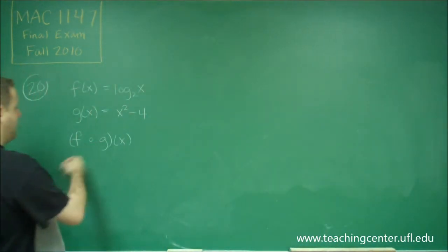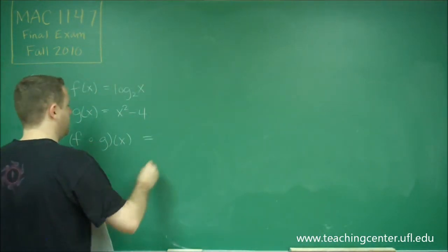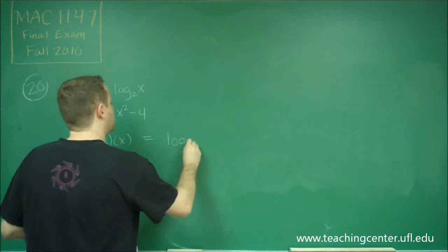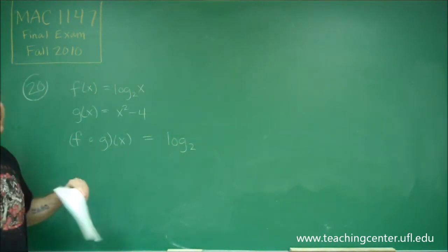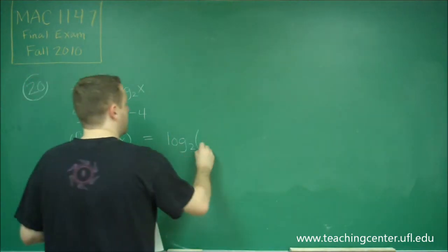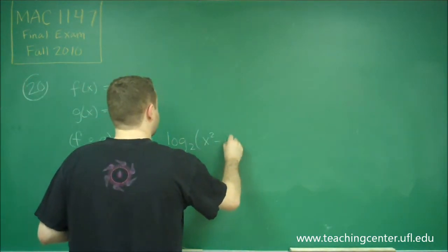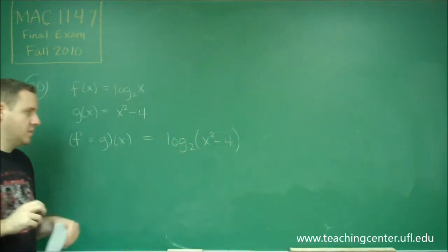So here, f of g of x is going to be log base 2, and then instead of x, we're going to plug in the entire g of x function, and we get x squared minus 4.